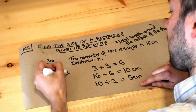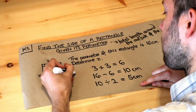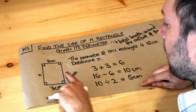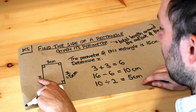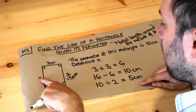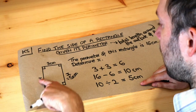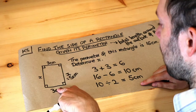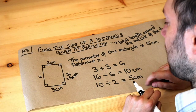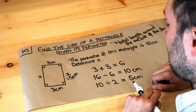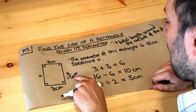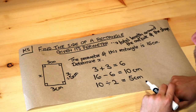So let's just check that. If this was 5 and this was 5, then 5 plus 5 is 10, plus 3 plus 3 is indeed 16 centimetres. So that is the correct answer.